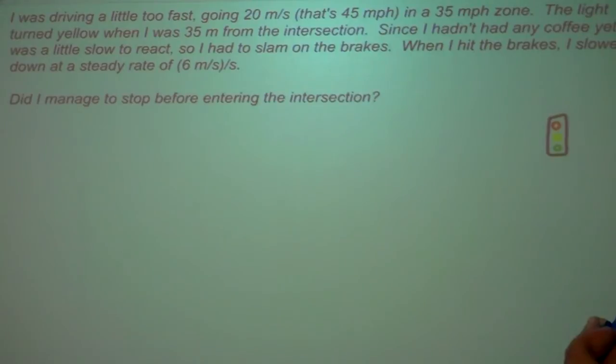Let's just take a minute to read what we're doing here. I'm driving 20 meters per second, that's about 45 miles an hour, which is too fast in a 35 mile an hour zone. Light turns yellow. I'm 35 meters away from the intersection. I slam on the brakes because I wasn't paying attention well enough. And I slow down steadily at 6 meters per second each second. And I want to know, do I come to a stop before I get into the intersection?